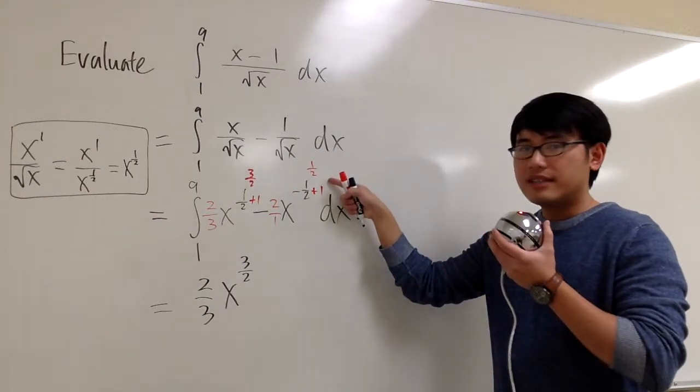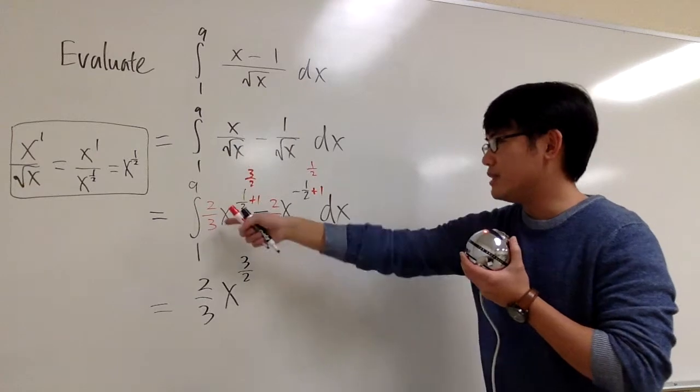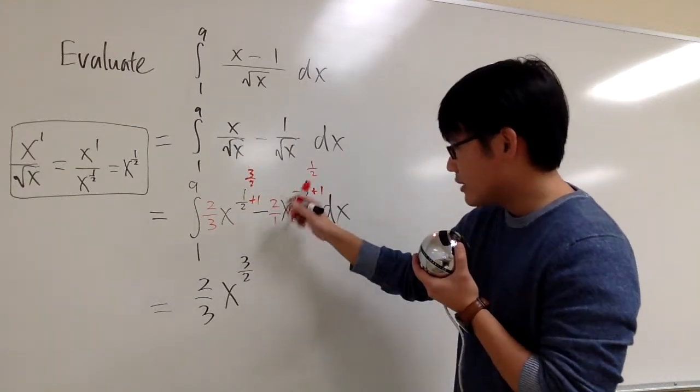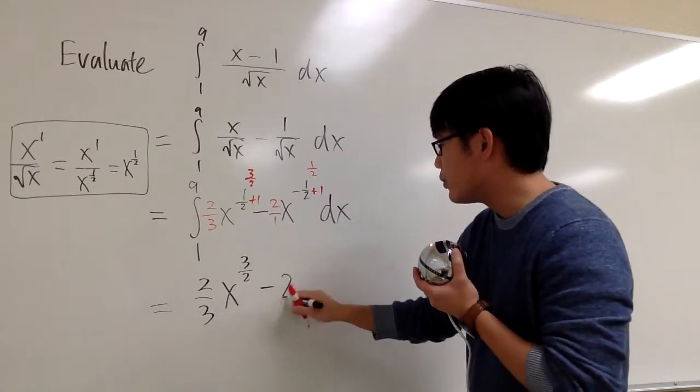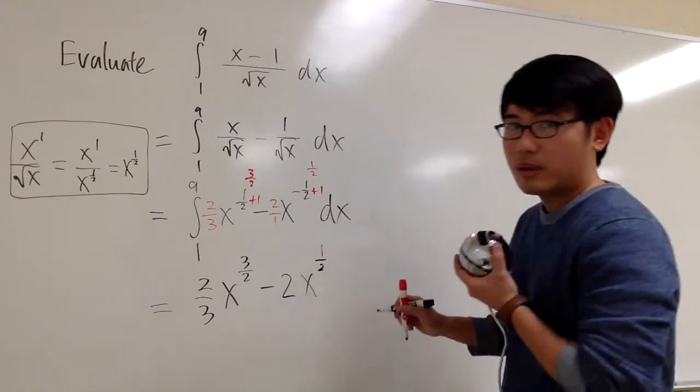Multiply by two over one. So let me just write this down. Divide by one-half, it's the same as multiplied by two over one, the reciprocal. Very similar to that. And this is a whole number. So this is minus two. And we have x raised to the positive one-half power.